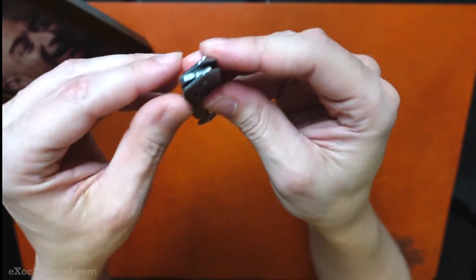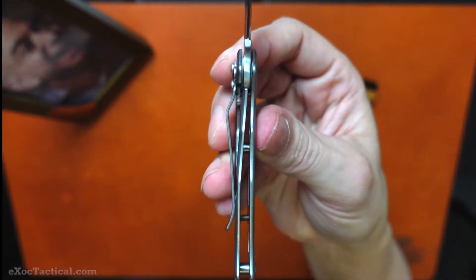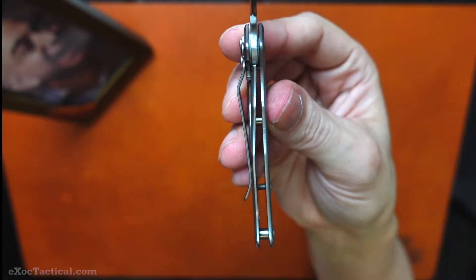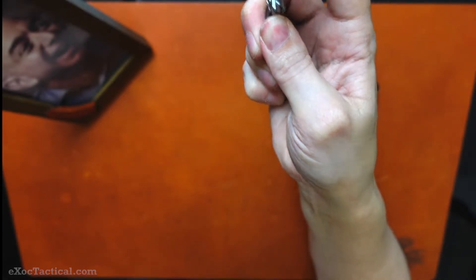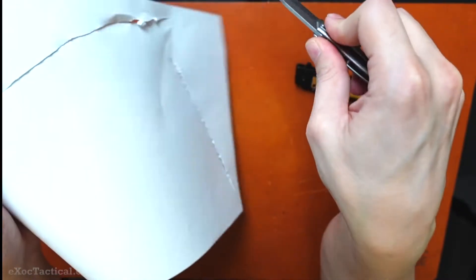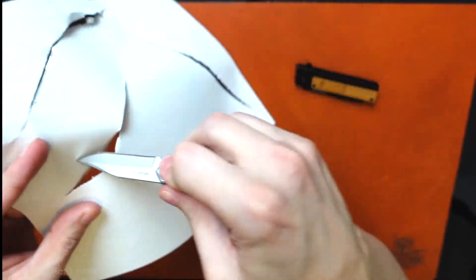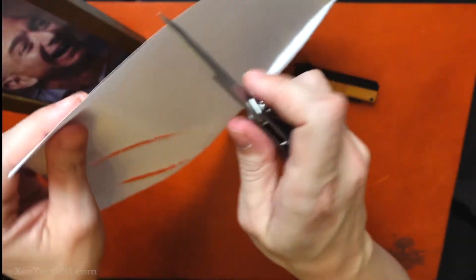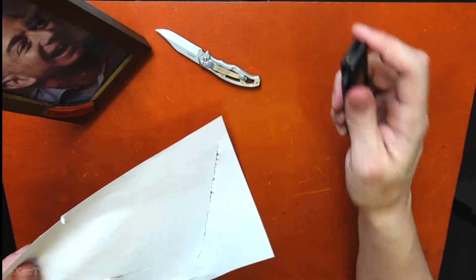Now here's the little Mini ParaFrame. Lockup on this little blade is a little bit more appropriate. But this little guy came from the factory wonderfully dull. So you're not going to be cutting much with it.